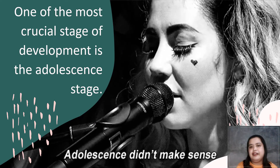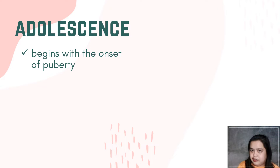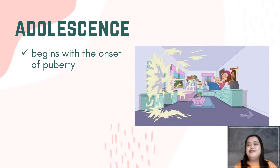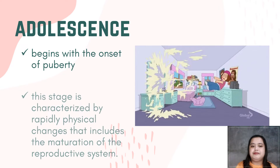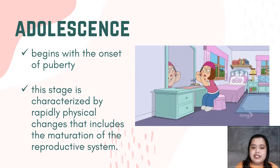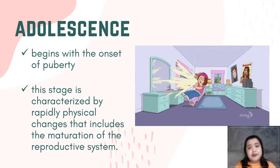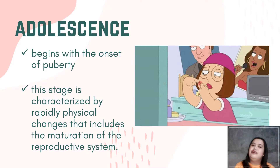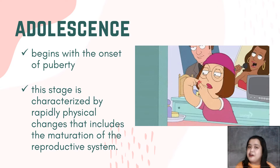When we say adolescence, we're talking about puberty — it starts during puberty. You will notice changes in your body. Usually, girls begin menstruation, and boys experience voice changes. This stage is characterized by rapid physical changes that include the maturation of the reproductive system. Because of hormonal changes, we may also experience acne breakouts and pimples. Because we become more conscious of our bodies during this stage, body image and self-esteem can be affected, which we'll discuss later.